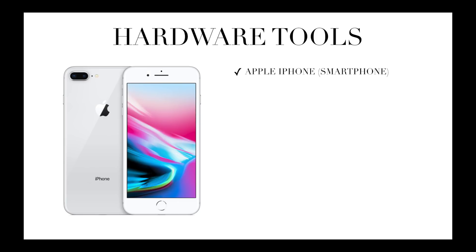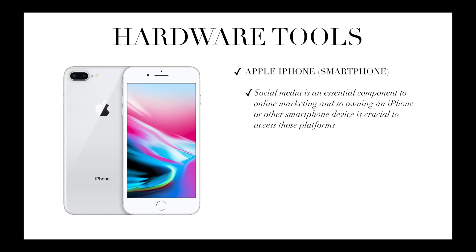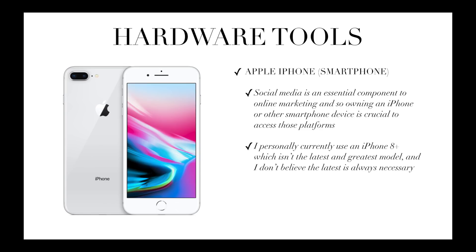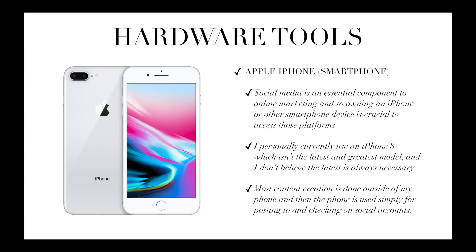Now let's talk about a smartphone. I use an Apple iPhone, and this is something I'm recommending because social media is an essential component to online marketing, so owning an iPhone or other smartphone device is crucial to access those platforms. I personally use an iPhone 8 Plus, which isn't the latest and greatest model, and I honestly don't believe you always need to have the latest and greatest. Most content creation is actually done outside of my phone — my phone is used simply for posting to and checking on social accounts. That great Canon 80D DSLR camera is what I would use to film a video or take a picture that I would then transfer to my phone to upload to Instagram, rather than using my phone for content creation.